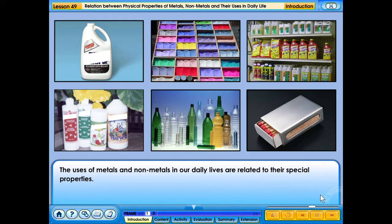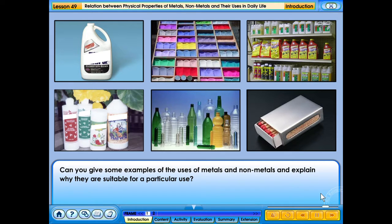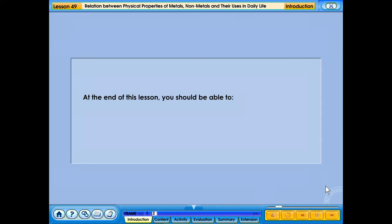The uses of metals and non-metals in our daily lives are related to their special properties. Can you give some examples of the uses of metals and non-metals and explain why they are suitable for a particular use? At the end of this lesson you should be able to relate the physical properties of metals and non-metals to their uses in daily life.